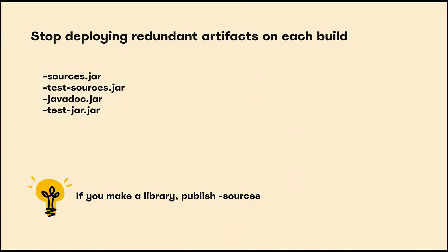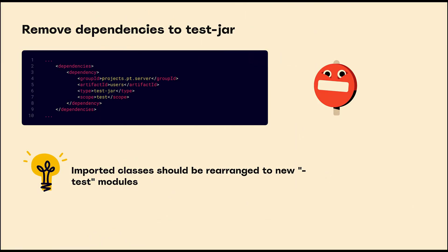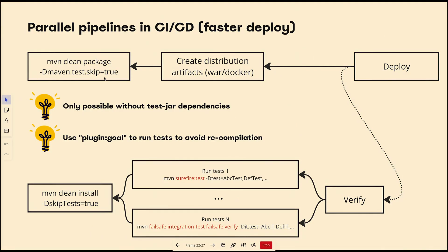In general, extracting to libraries can be much faster. If you're making a library it could make sense to deploy a sources JAR with it, but in most cases just stop deploying additional artifacts like sources, test sources, Javadoc, and test JARs. These consume time, consume space on your registries, and nobody usually downloads those artifacts. If you're using test JAR dependencies, I strongly recommend stopping — it brings issues with IDE integrations and also prevents you from running builds with the -DskipTests flag.